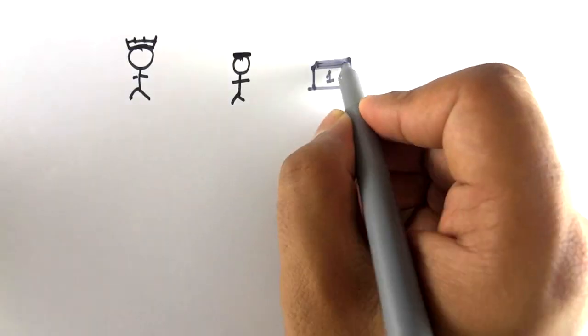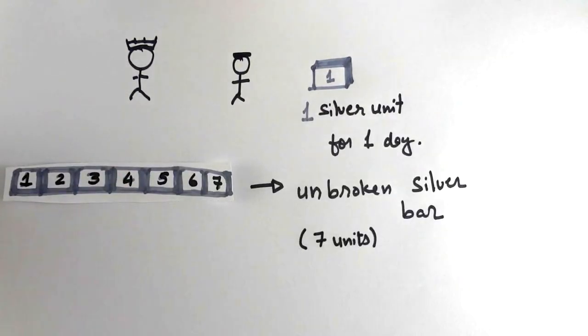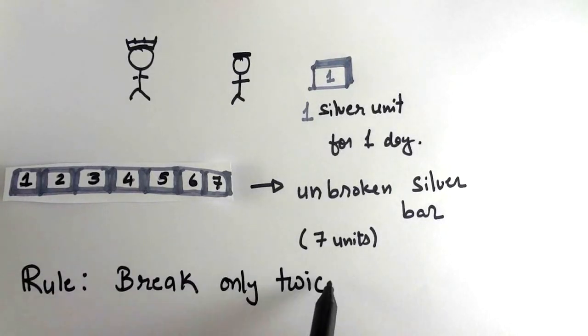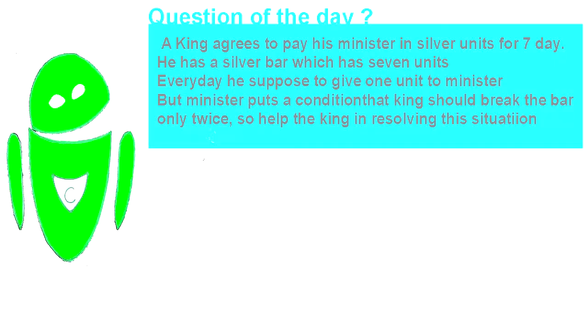A king agrees to pay his minister in silver units for seven days. He has a silver bar which has seven units. Every day, he is supposed to give one unit to minister. But minister puts a condition that king should break the bar only twice. So help the king in resolving this situation.